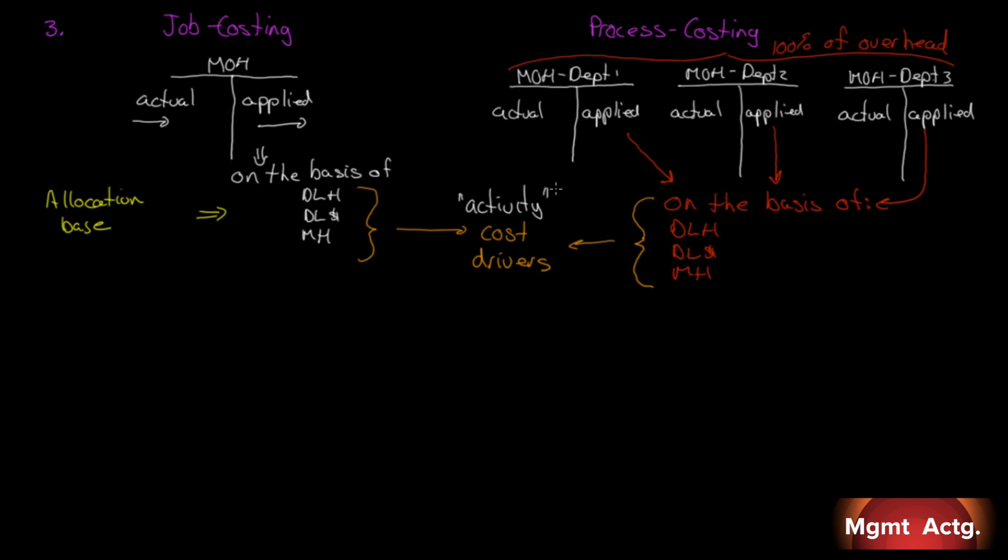We can also think of those as activity cost drivers because it's that activity that drives the cost. I'm moving you one step closer to activity-based costing. I've introduced the word activity. We understand where that word activity sits now. It refers to these, this allocation base. Now, under ABC,